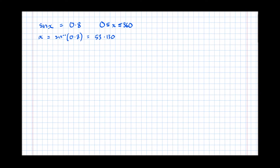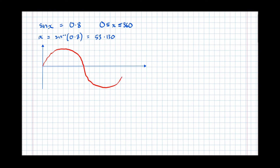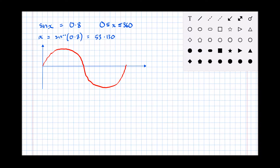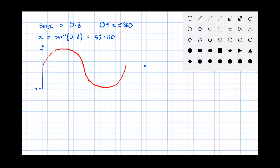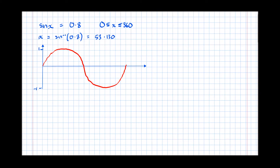The next step: we need to draw a big diagram of the sine graph within the range that we're given, which is 0 to 360. It doesn't need to be perfect — it just needs to have all the key points and be big enough to annotate. We want all solutions that have a sine of 0.8. If this graph goes as high as 1 and as low as minus 1, drawing a horizontal line at 0.8, our solutions lie at two points on the curve.